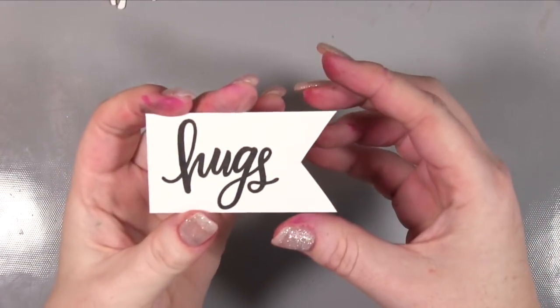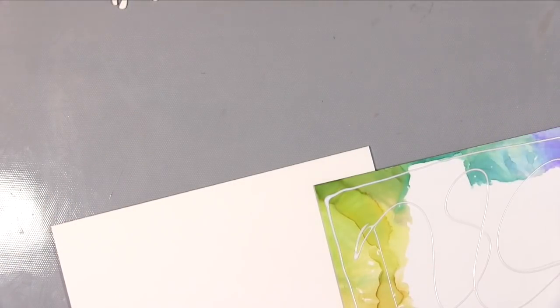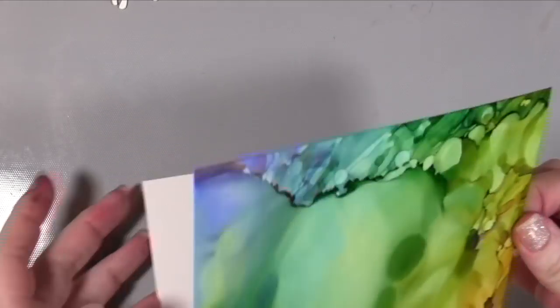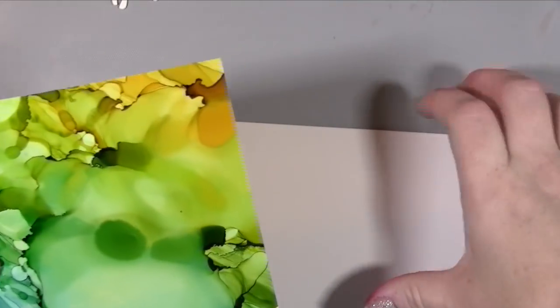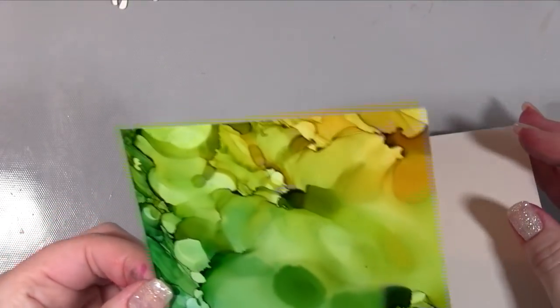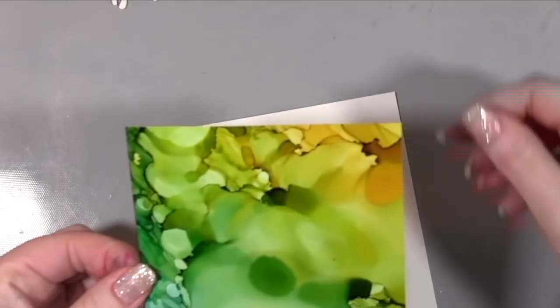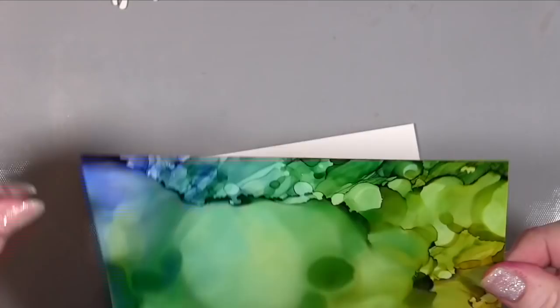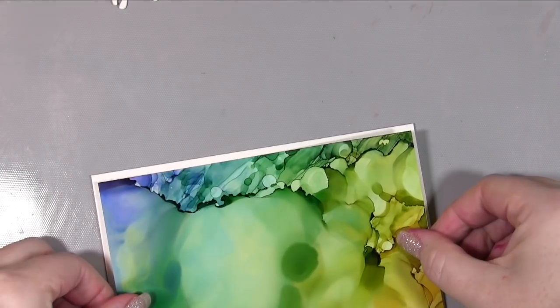Having cut all three backgrounds to size, I'm just using some wet adhesive, this is my Cosmic Shimmer. Normally on something like watercolors I would use tape, but because the Yupo paper is completely not distorted and absolutely beautifully flat,